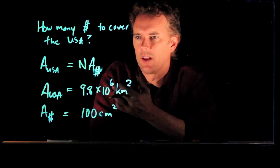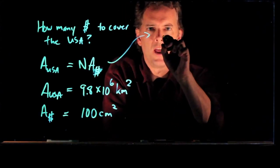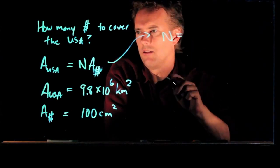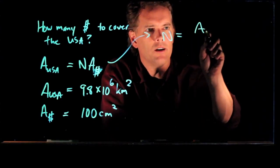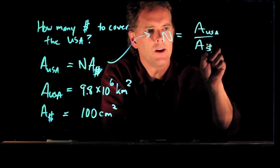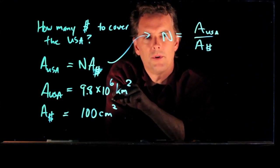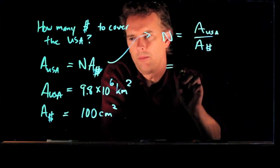Okay, so if you want to know how many it's going to take, we can just look at this equation right here, and we can say N is the area of the USA divided by the area of the dollar bill. Okay, and we know those numbers, right? So we can put them in.